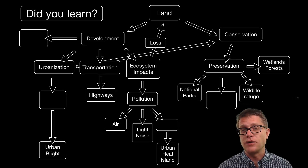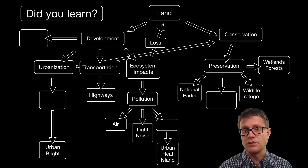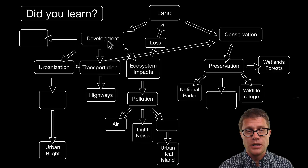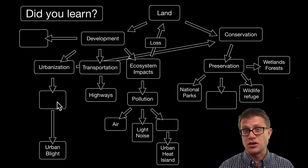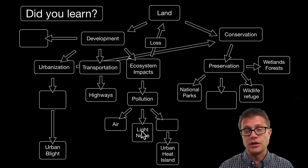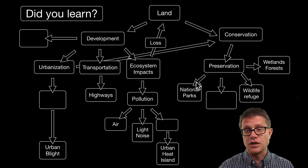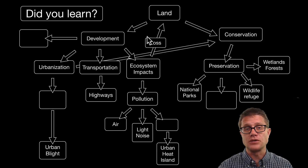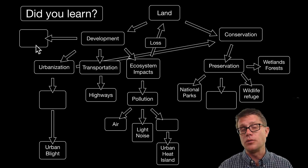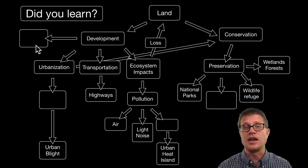Could you pause the video at this point and fill in the blanks? Remember: development and urbanization can cause urban sprawl. Pollution could be air pollution, light pollution, and heat pollution. We are trying to conserve our planet, preserving it in national parks, wilderness areas, wildlife refuges, and wetland areas. But the biggest thing is we have to be smart in the growth — we are always going to have development but we have to make that smart development.